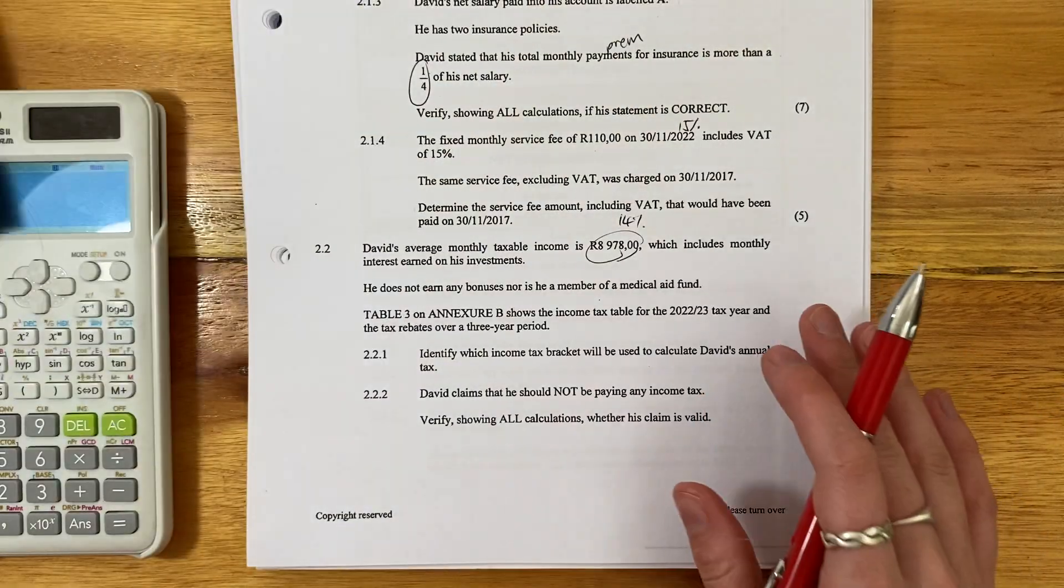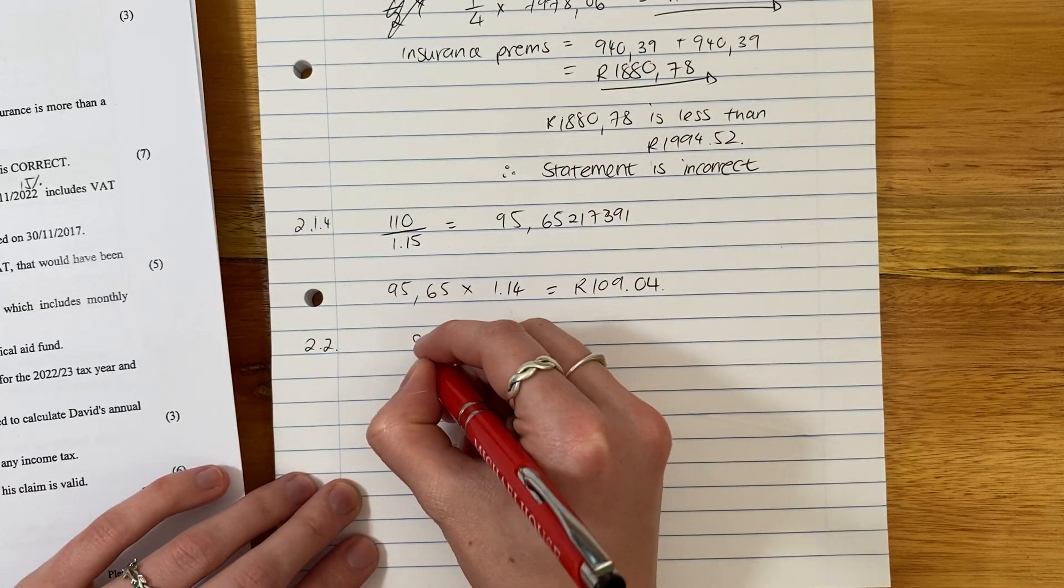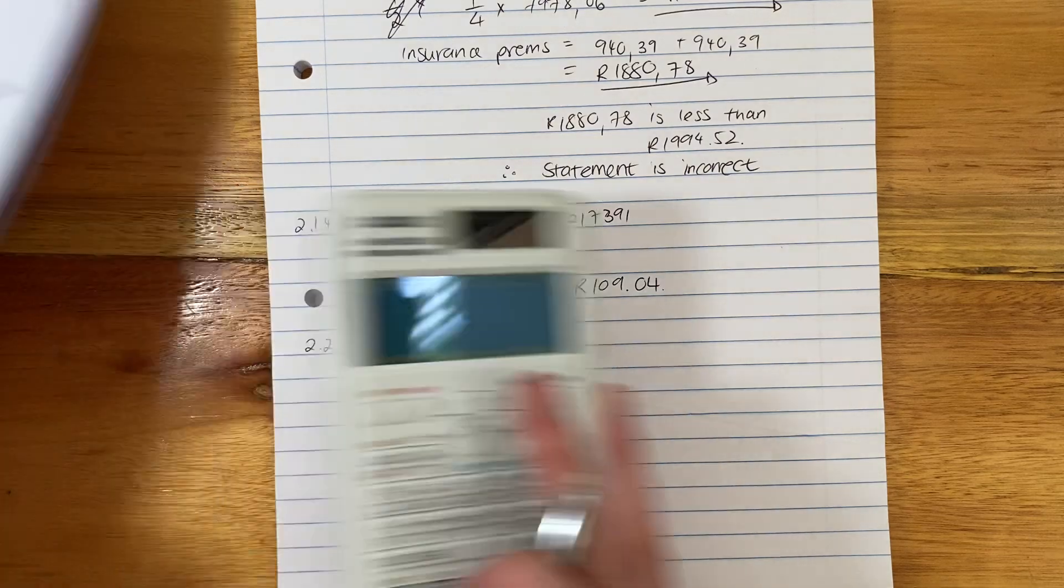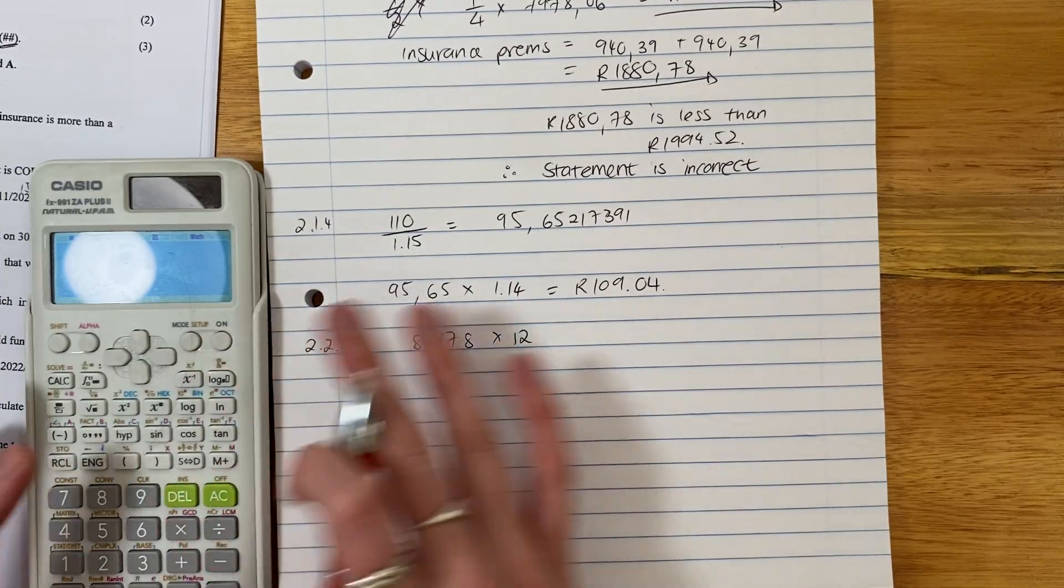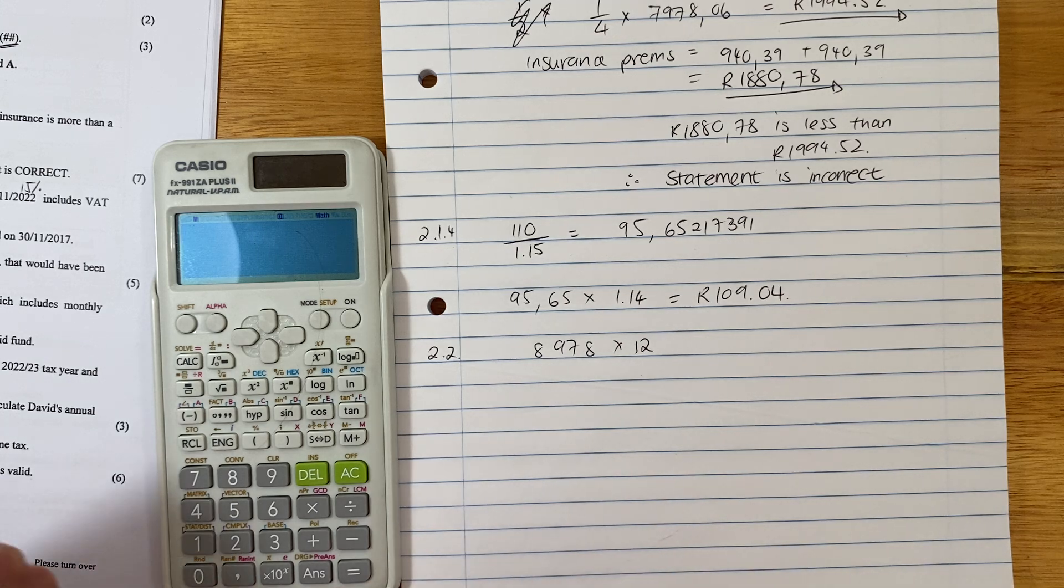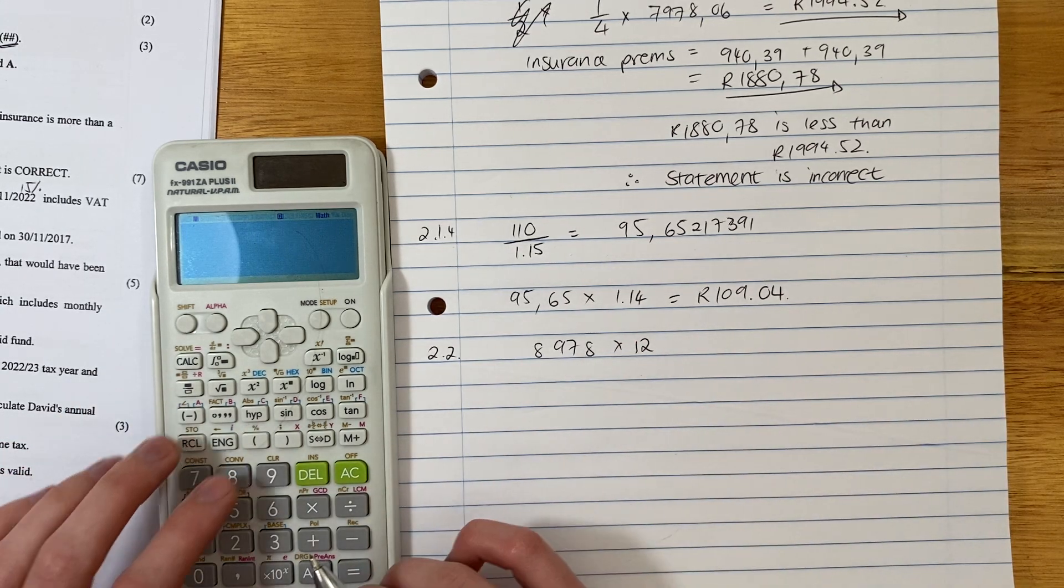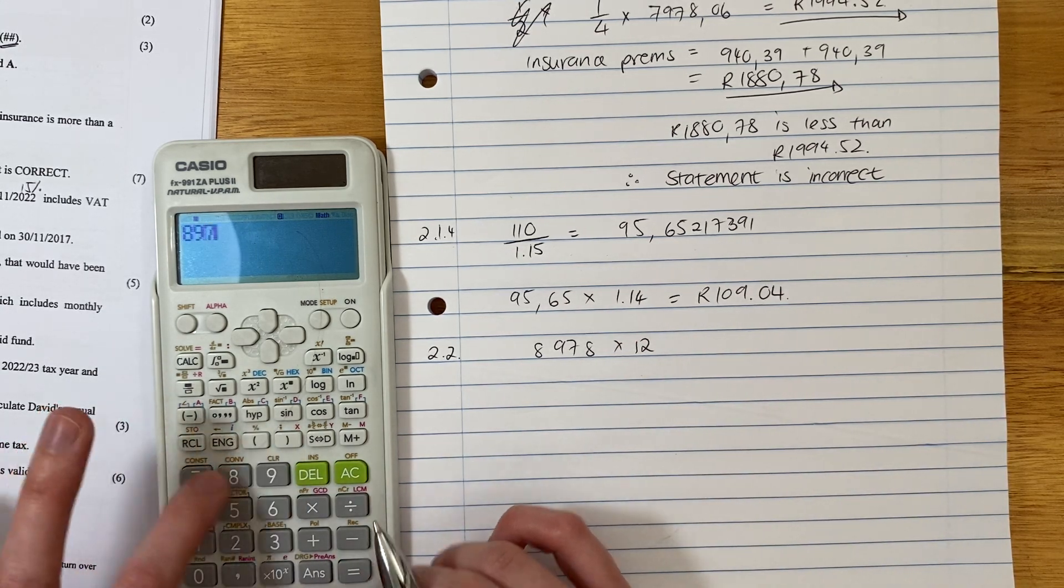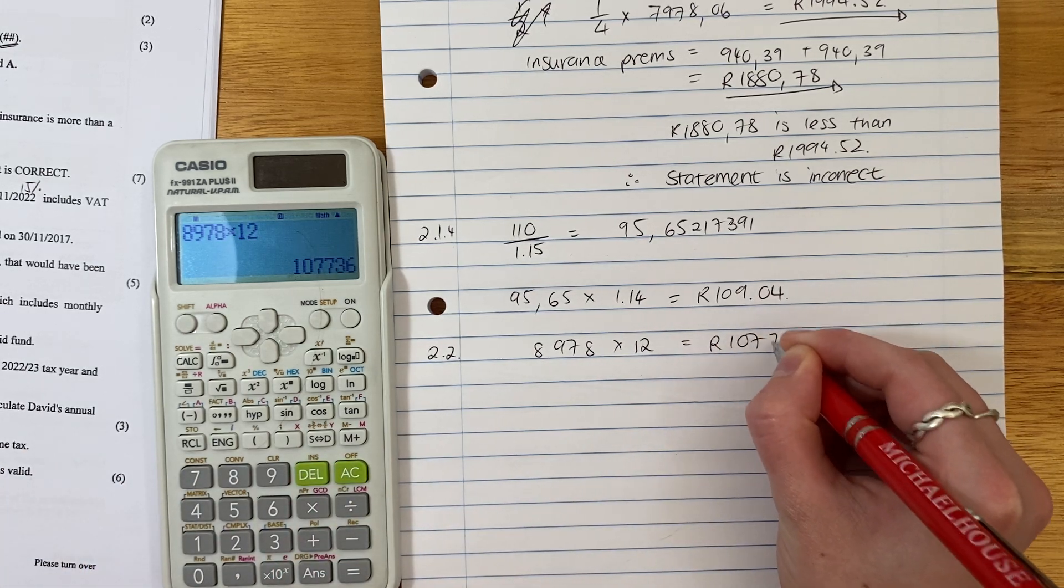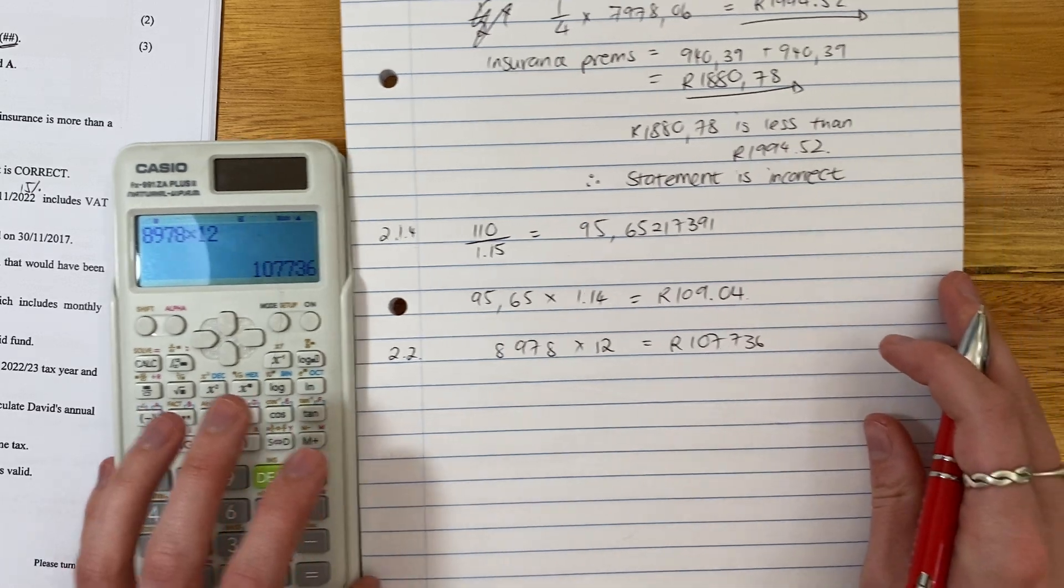2.2.1. Identify which income bracket will be used to calculate David's annual tax. So remember, tax is always calculated on an annual level. This is given in months. So we need to first and foremost go and times this by 12 to get his annual rate. Very important. Students, and remember, it's more than two marks. So we know if it's more than two marks, a little bit of calculation required. 89,738 times 12. So his annual income is that.